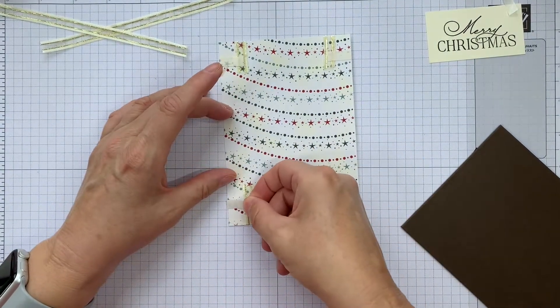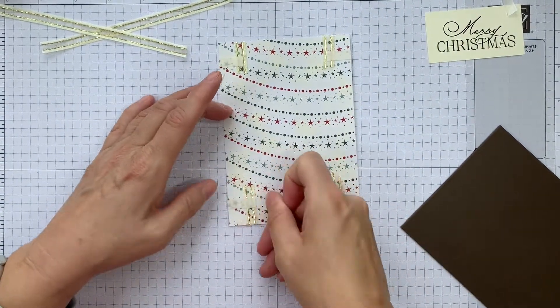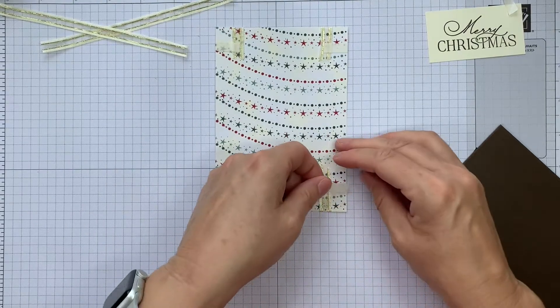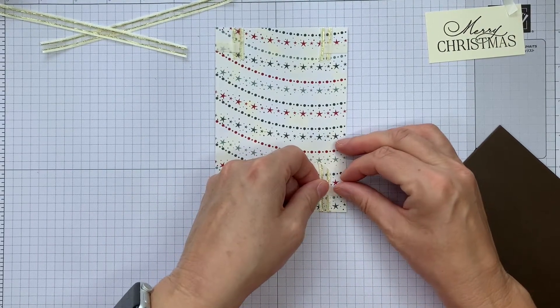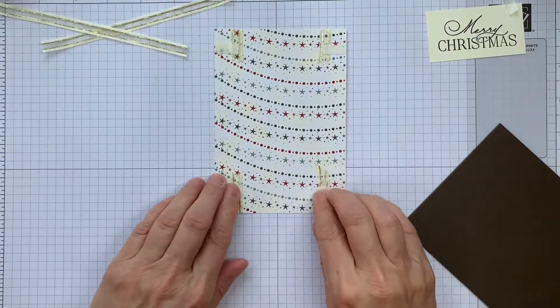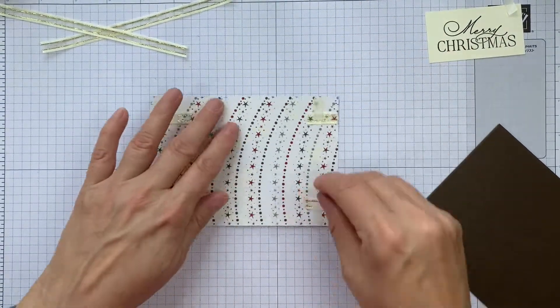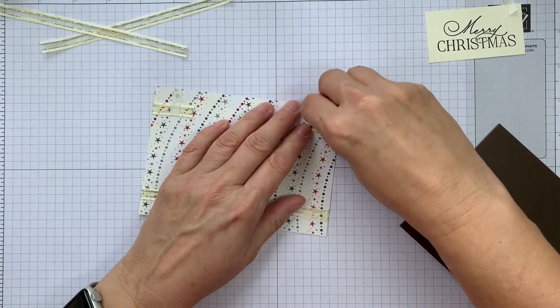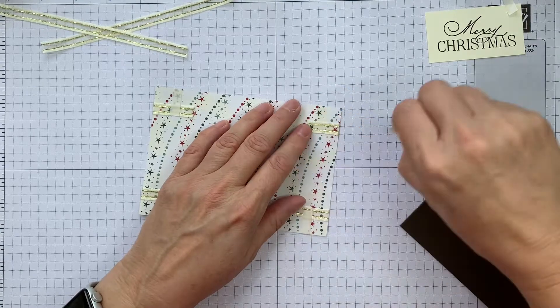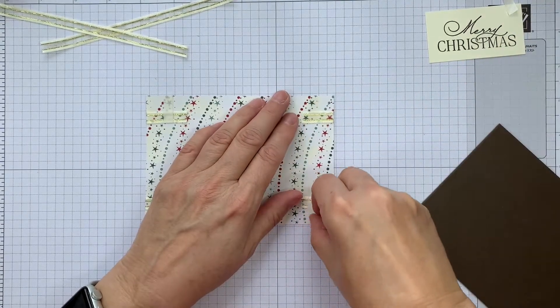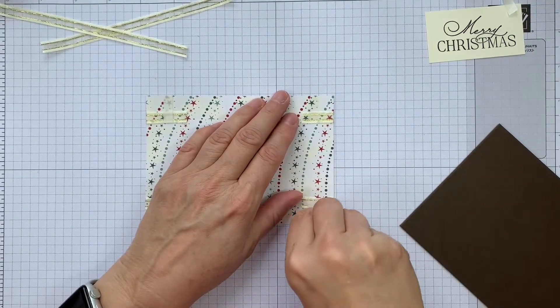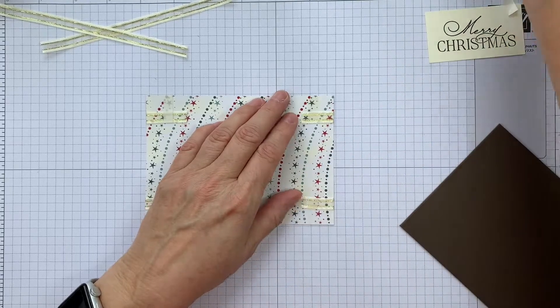Again, creating a square just by eye. As long as it looks fairly square, it's going to work. So again, peel off the backing of the tear and tape. Like that.